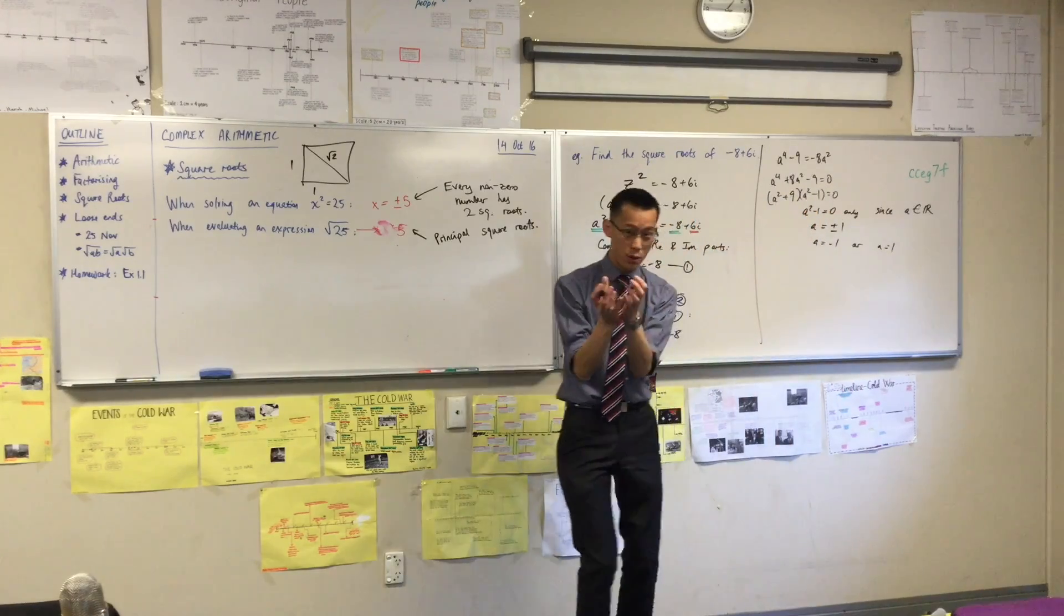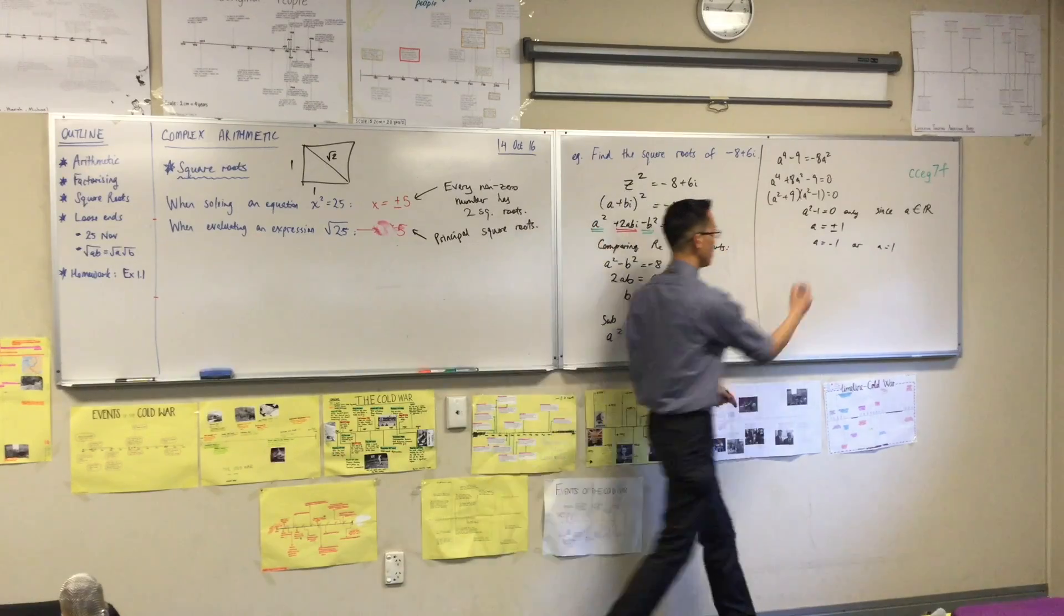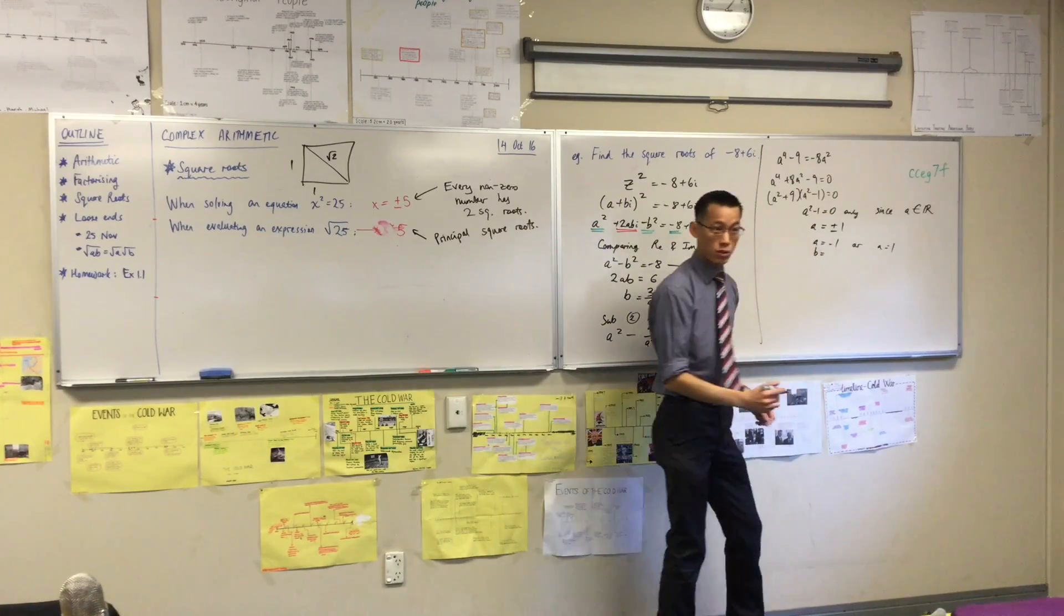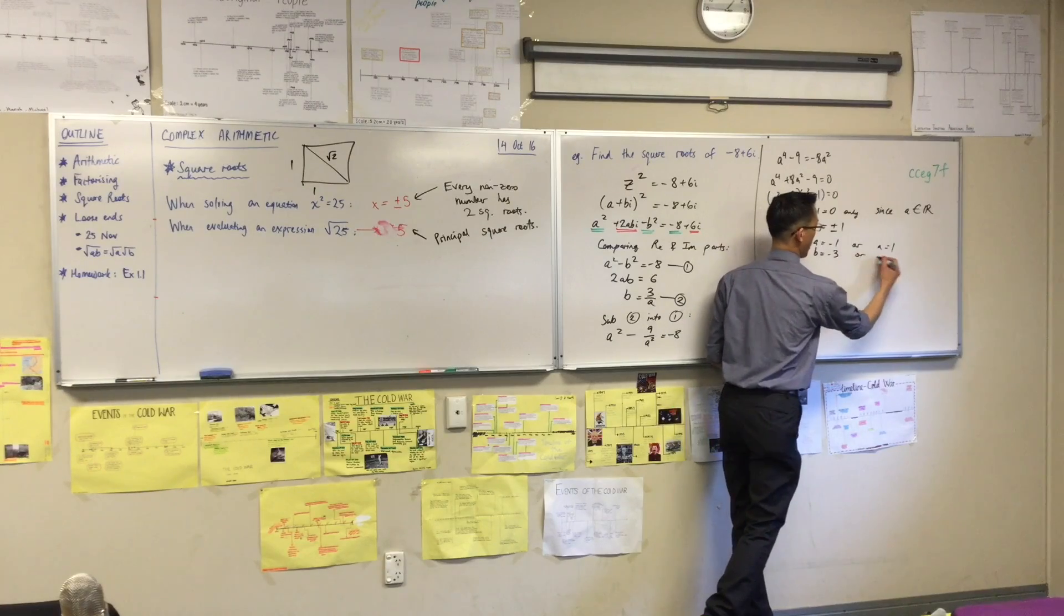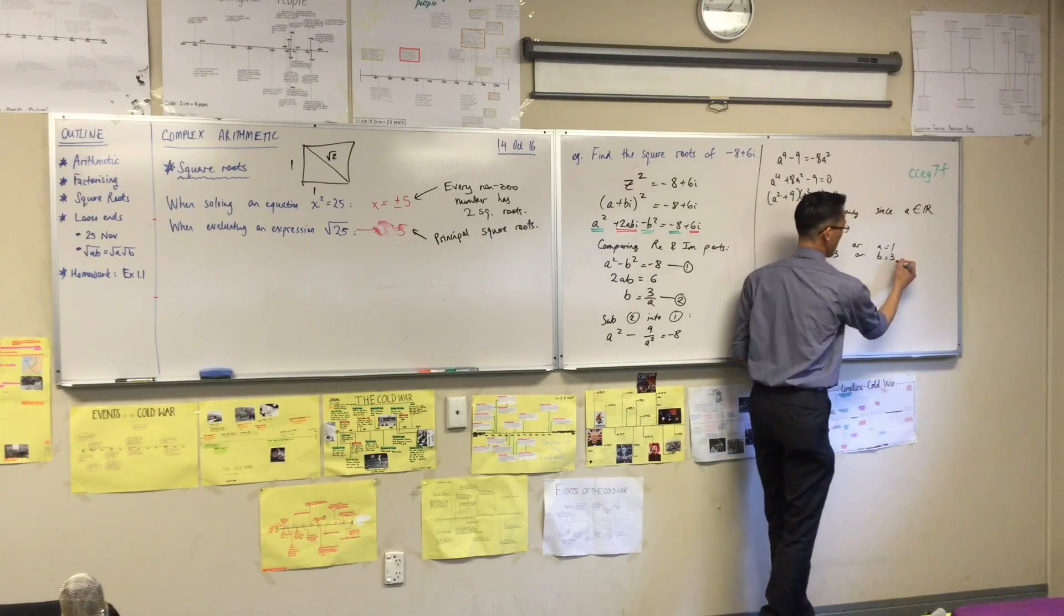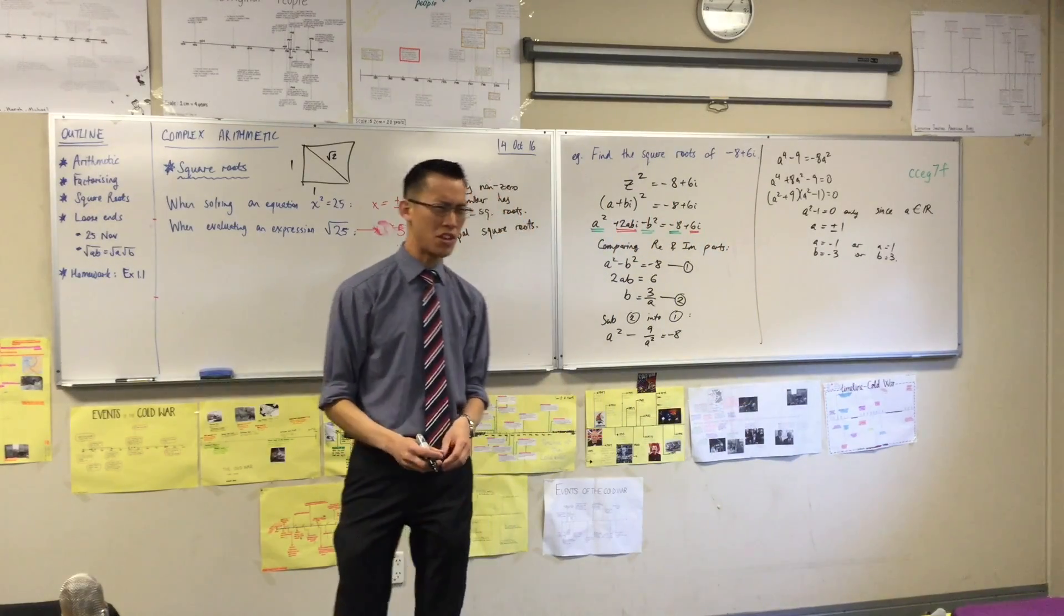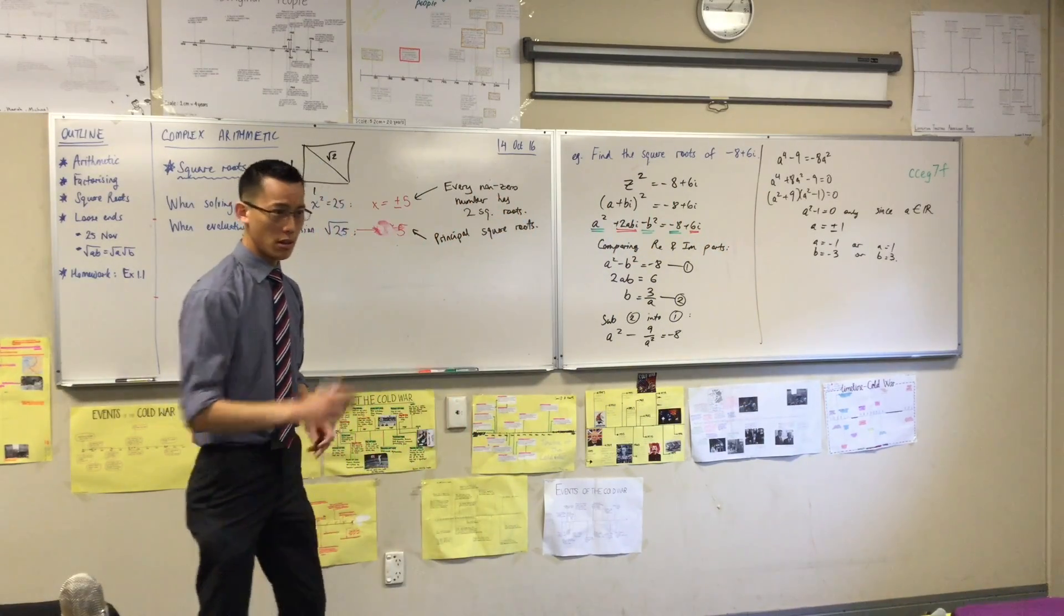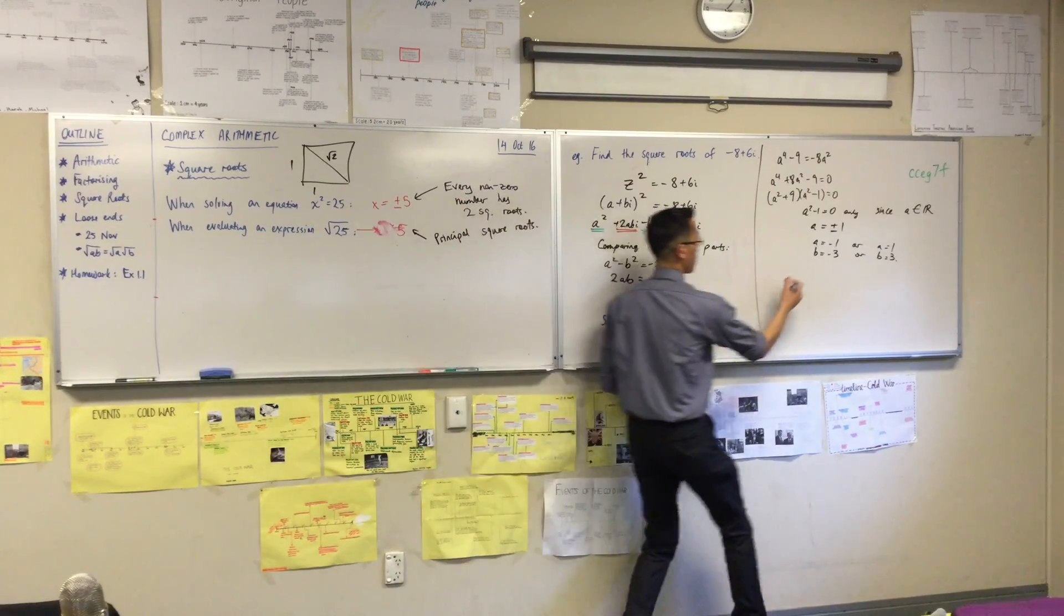But of course, every value of a will give you a value of b. So for the negative value, b is going to be equal to negative 3. And in this case, b is just going to be 3. So now I have solved my simultaneous equations. Why was I solving simultaneous equations again? To find the values that would go into my square roots, right? So therefore,